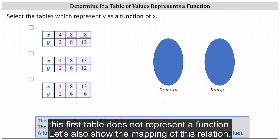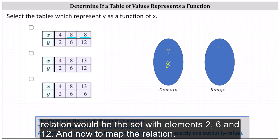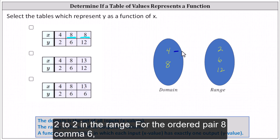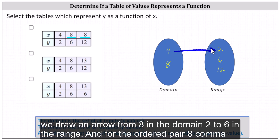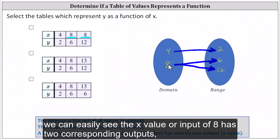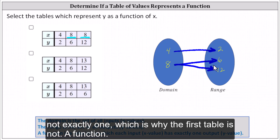Let's also show the mapping of this relation. The domain of the relation would be the set with elements four and eight. The range of the relation would be the set with elements two, six, and twelve. For the ordered pair four comma two, we draw an arrow from four in the domain to two in the range. For the ordered pair eight comma six, we draw an arrow from eight to six. For the ordered pair eight comma twelve, we draw an arrow from eight to twelve. Notice we can easily see the x value of eight has two corresponding outputs, not exactly one, which is why the first table is not a function.